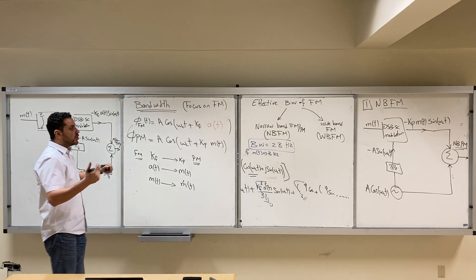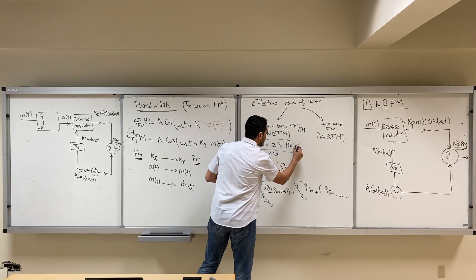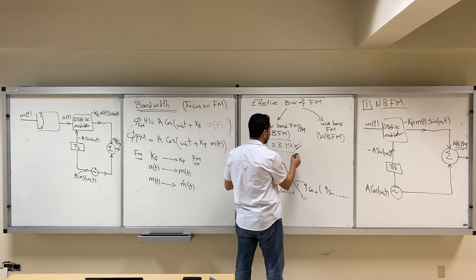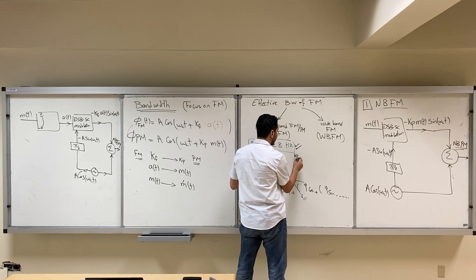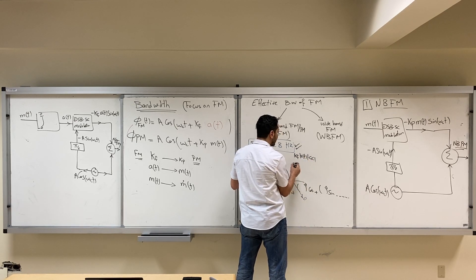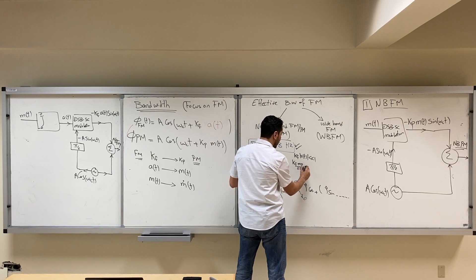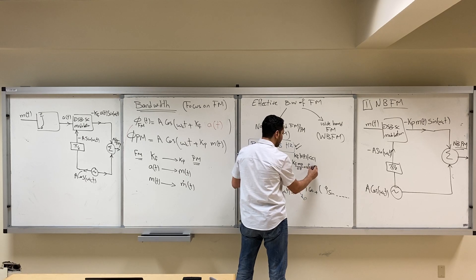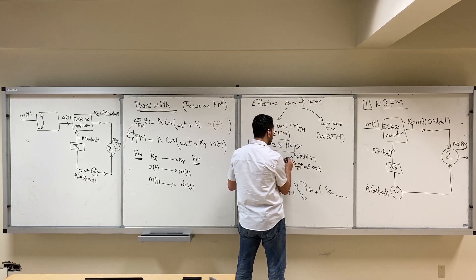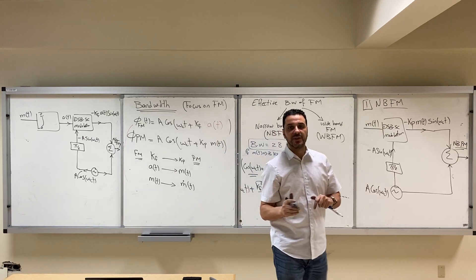In summary, the bandwidth of narrowband FM is 2B hertz. The condition for narrowband FM is either that Kf·|A(t)| is much smaller than 1, or equivalently that delta F = Kf·Mpeak / 2π (the frequency deviation) is much smaller than B. We will stop here and continue in the next video.